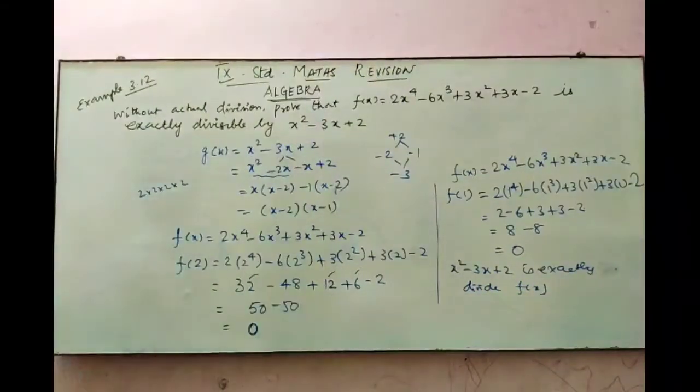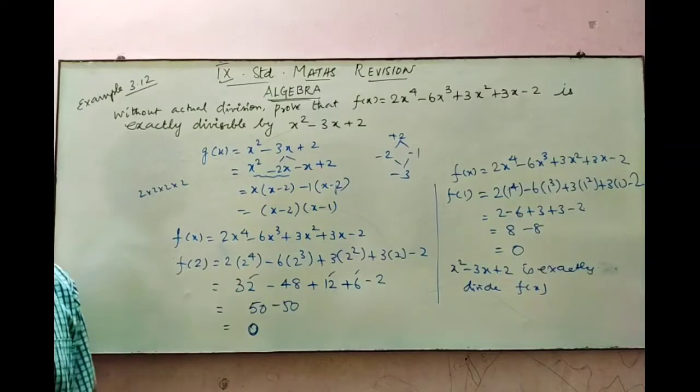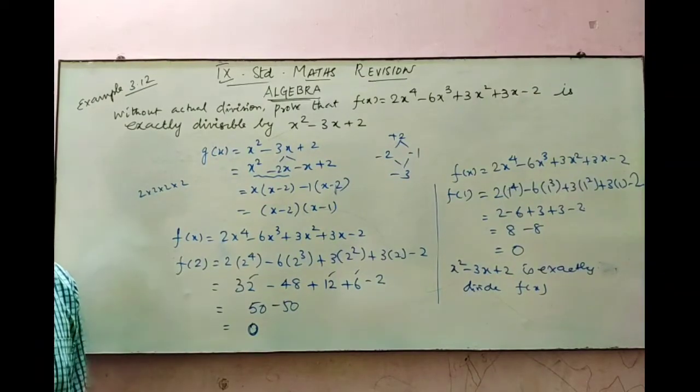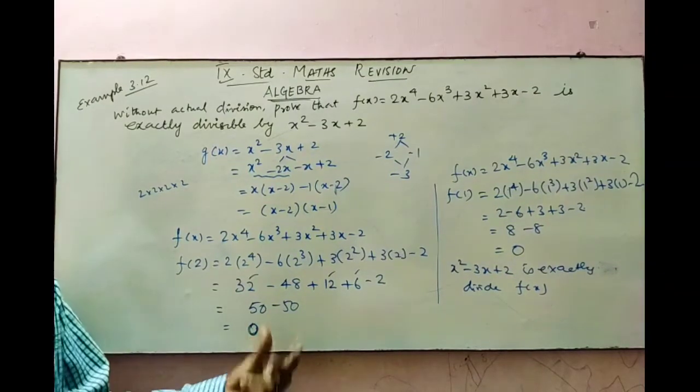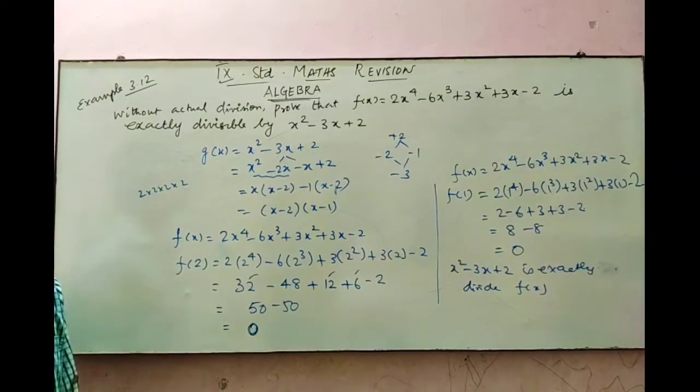Since both F of 2 and F of 1 equal 0, the quadratic polynomial x squared minus 3x plus 2 exactly divides F of x — proved without actual division.